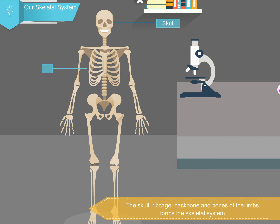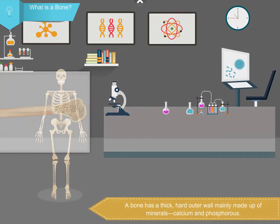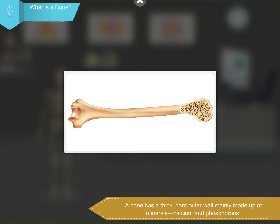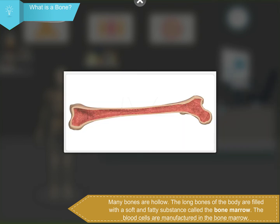The skull, ribcage, backbone and bones of the limbs form the skeletal system. A bone has a thick, hard outer wall mainly made up of minerals, calcium and phosphorus. Bones have their own blood supply and nerves. Many bones are hollow.